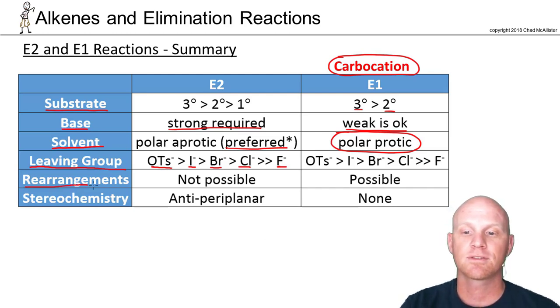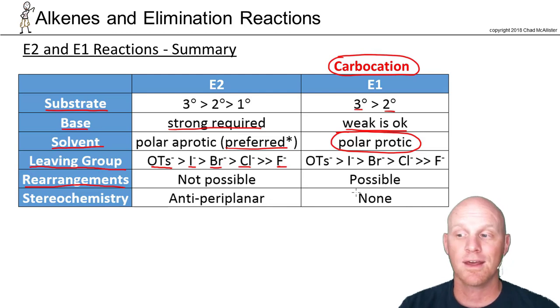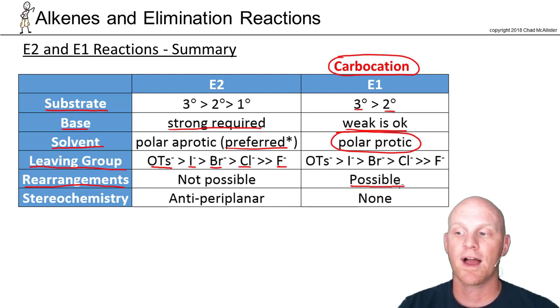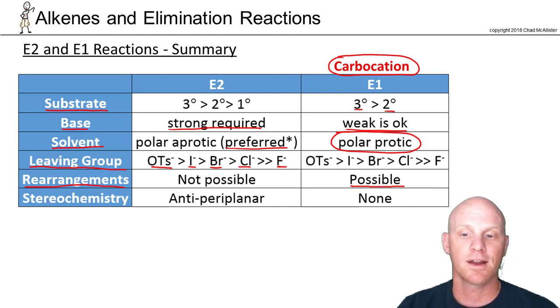Rearrangements: you only get rearrangements if you get a carbocation, and you only get a carbocation in an E1 reaction. So rearrangements are only possible in E1, not E2.